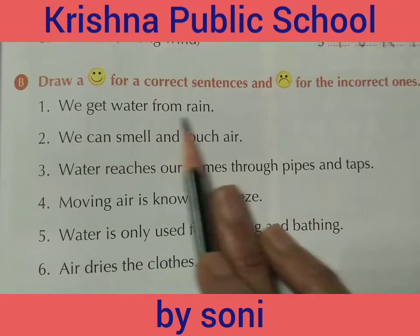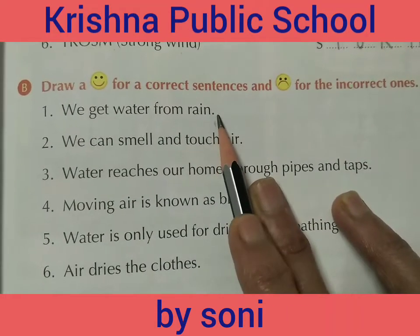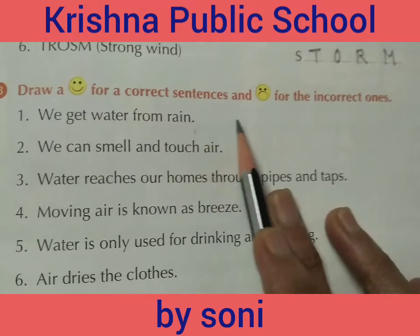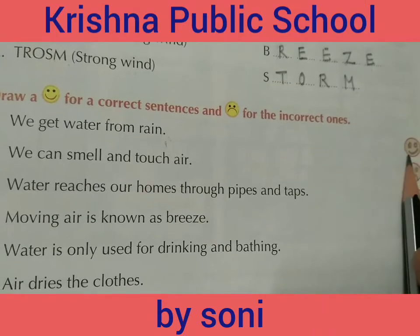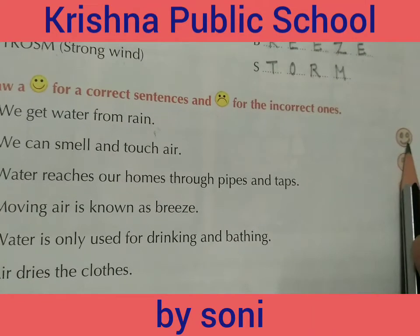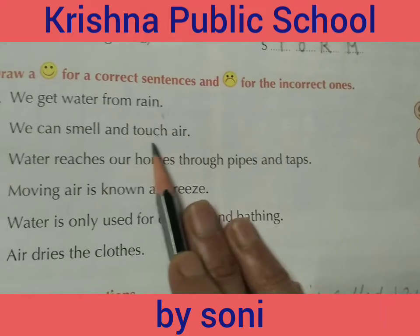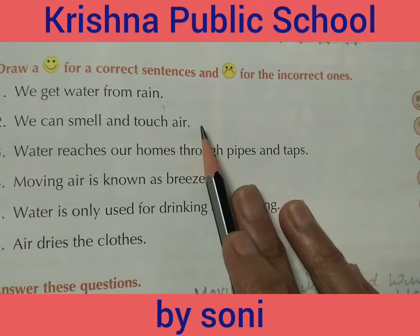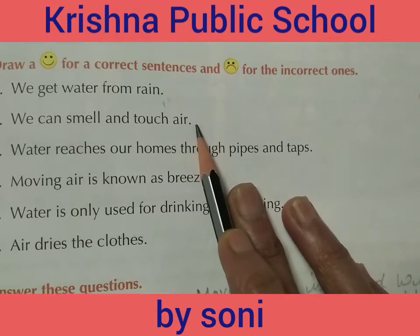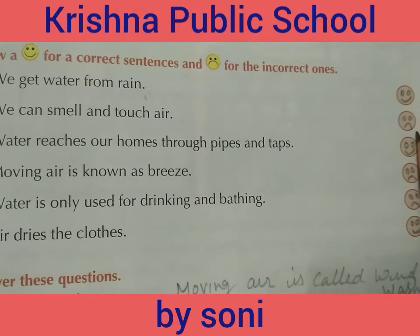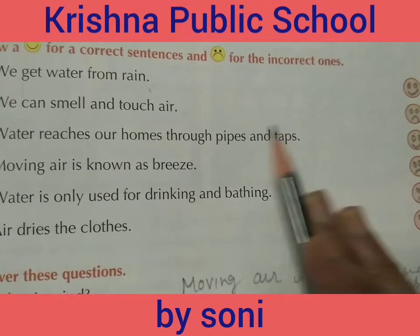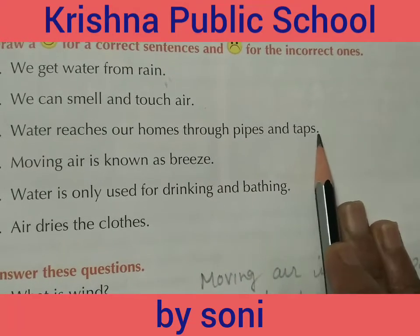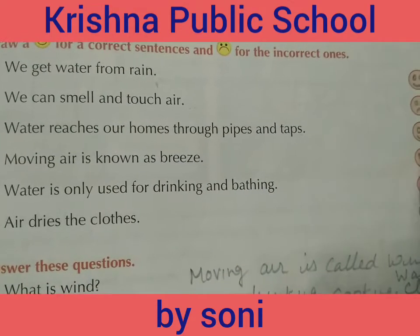Number one: 'We get water from rain.' It's correct — water ka main source rain hai. We get water from rain. It's correct, so we draw a happy face here. Number two: 'We can smell and touch air.' Hum air ko smell bhi kar sakti hain aur touch bhi kar sakti hain — it's incorrect. Na to hum smell kar sakti hain na touch kar sakti hain. So we draw a sad face here. Number three: 'Water reaches our homes through pipes and taps.' It's correct, so we draw a happy face here.